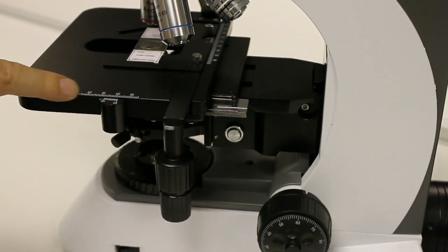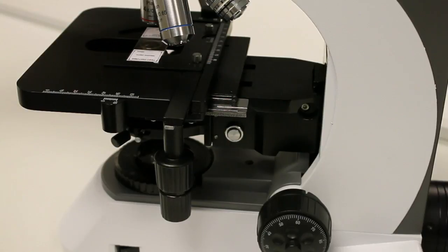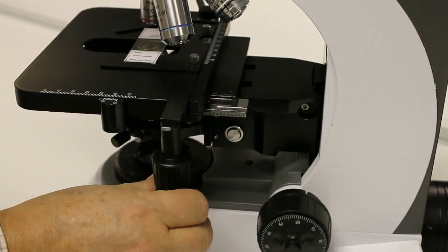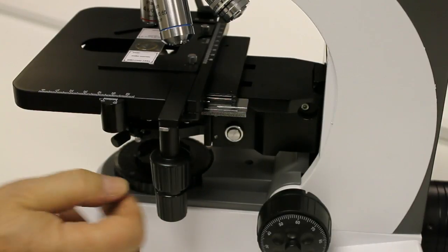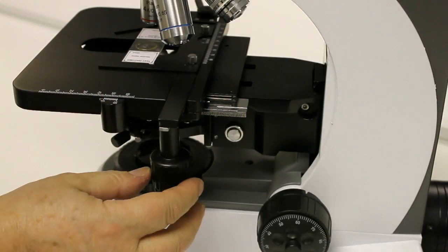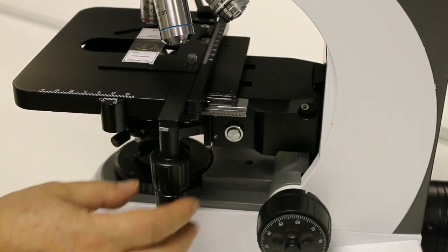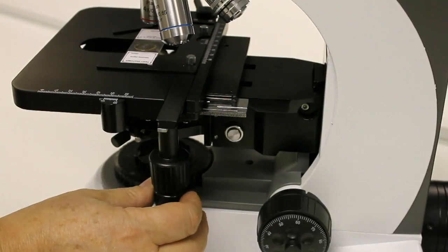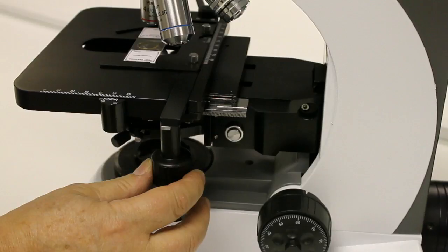And on the stage there are two vernier scales - one along here and one along the back just there. So you can take a map reference of any particular part of the slide that you're on, and if you reset the vernier scales to that reference and put the slide back in, you'll be at exactly the same point on the slide.